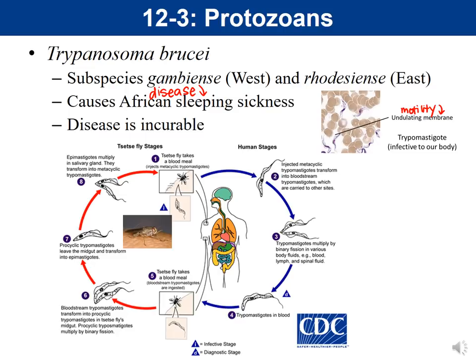In terms of stages you need to know for the practicum, you need to know the trypomastigote. The trypomastigote is the stage of the life cycle that is infective to our body — it's the one you get infected by, and it's the one you need to identify under the microscope. The other stage you're responsible for is called the epimastigote, which is what develops in the tsetse fly.